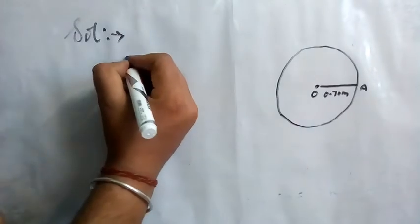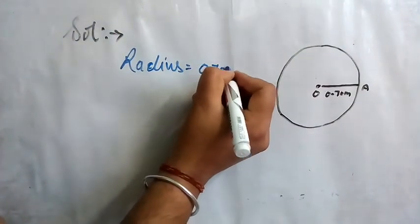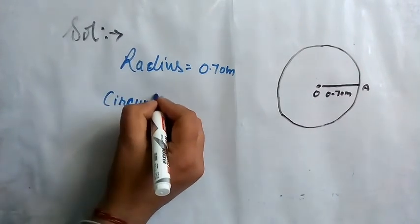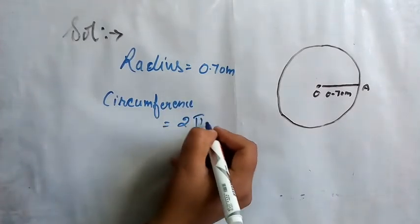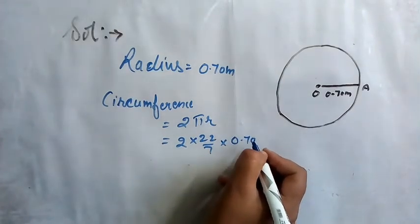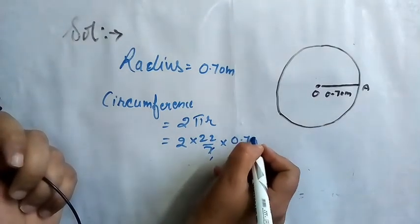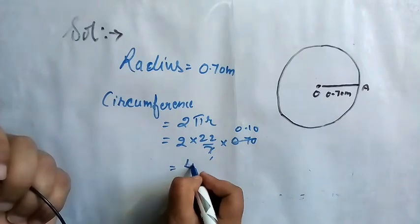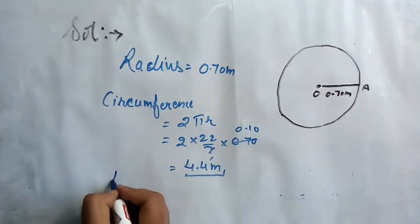Radius of circle equals 0.70 meters. Circumference will be 2πr, which is 2 × (22/7) × 0.70. Dividing: 7 into 0.70 gives 0.10, then multiplying gives 4.4 meters.